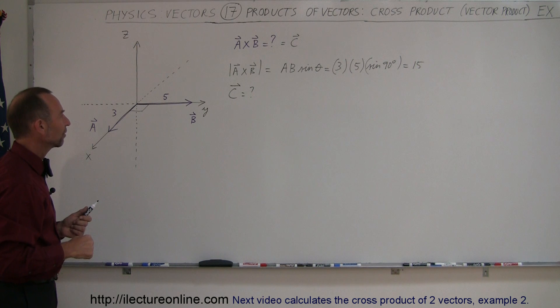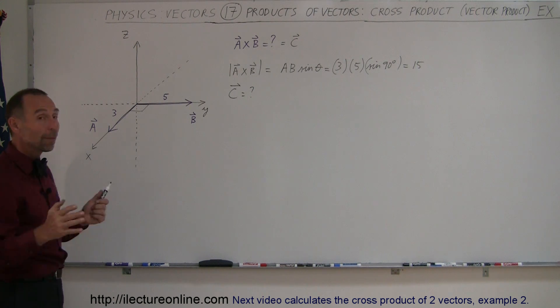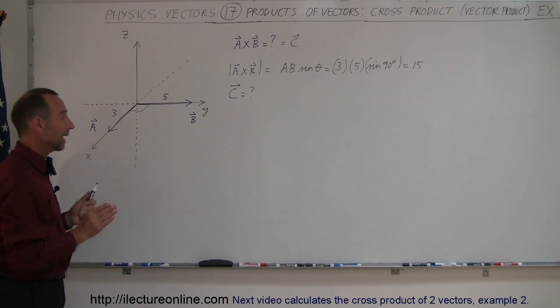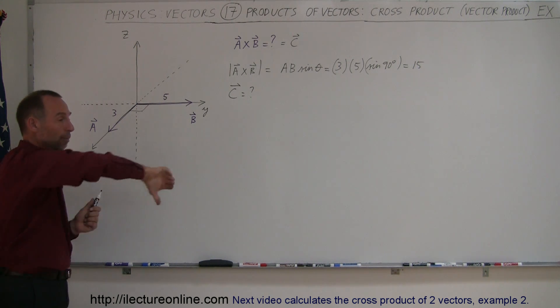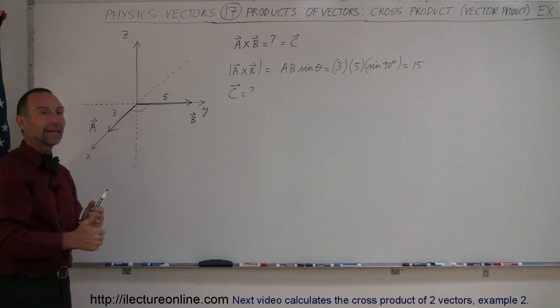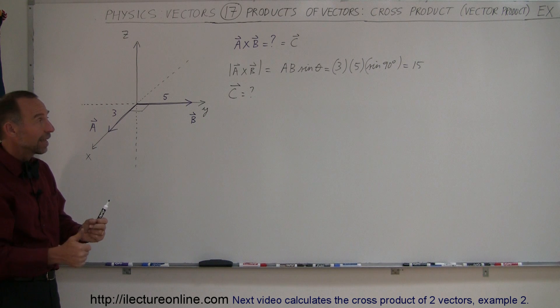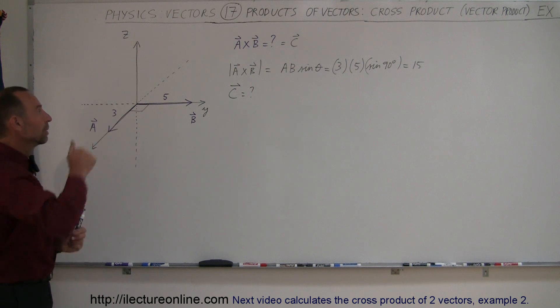So remember: whether you compute A cross B or B cross A, the magnitude is the same, but the direction is different.